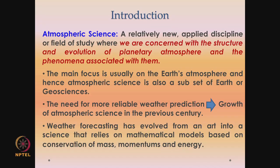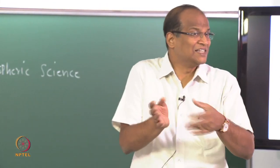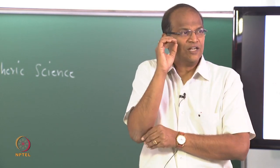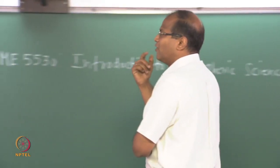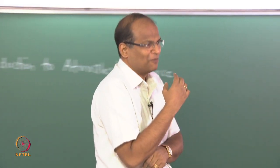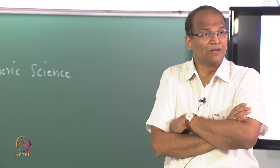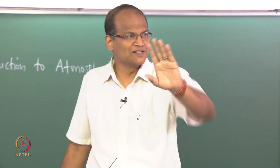Atmospheric science developed as a separate subject because of the requirement for reliable and accurate weather prediction — for agricultural production, monsoon forecasting, and so on. People wanted to know about the weather, and the demand started the study. Weather prediction has hopefully evolved from an art into a science, and today it is based heavily on mathematical models, not just instruments and charts or extrapolation of previous years.